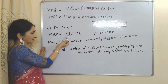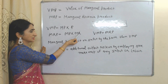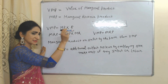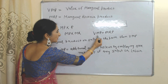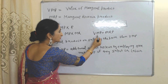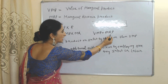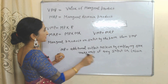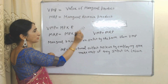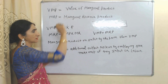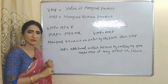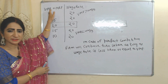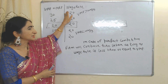As we know, in case of perfect competition, price is equal to marginal revenue. So if price equals marginal revenue, that means VMP will always equal MRP in case of perfect competition. So in case of perfect competition, Value of Marginal Product will always equal Marginal Revenue Product.